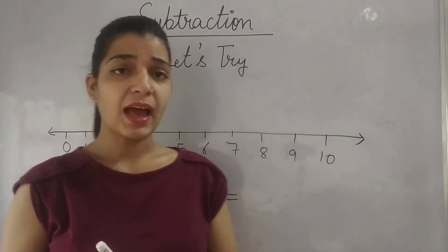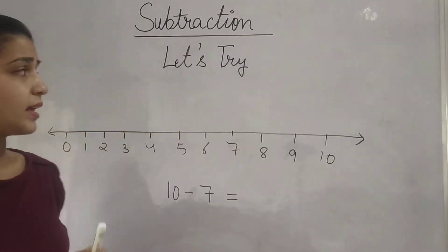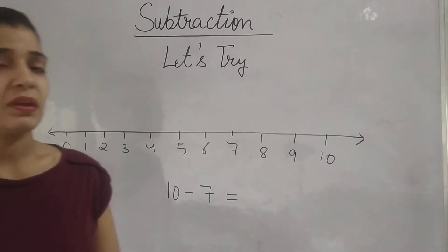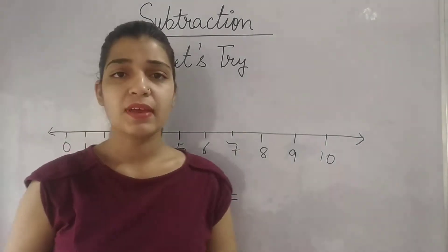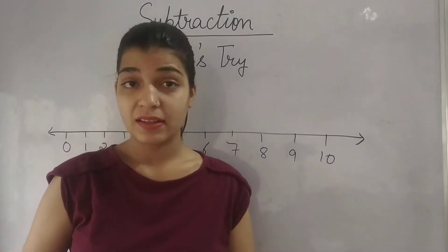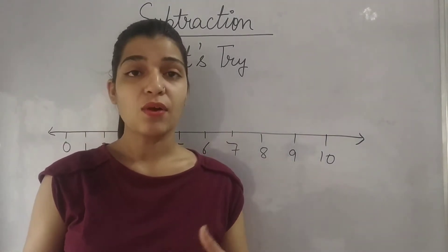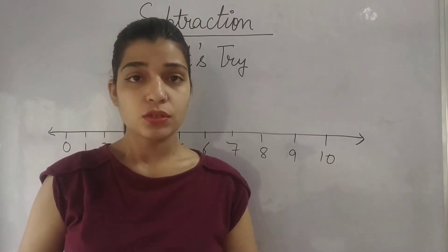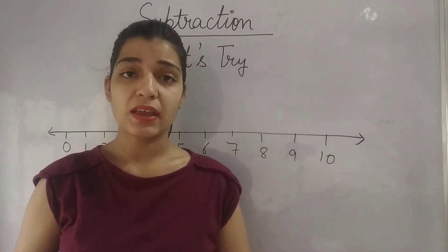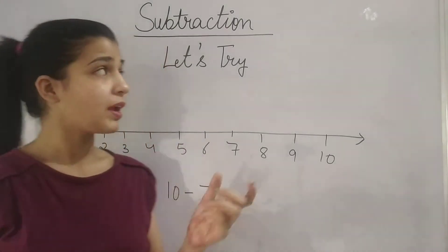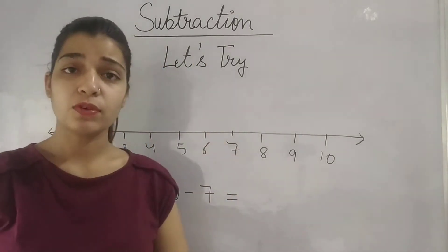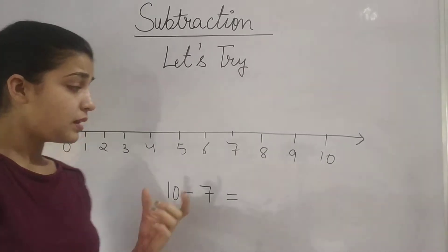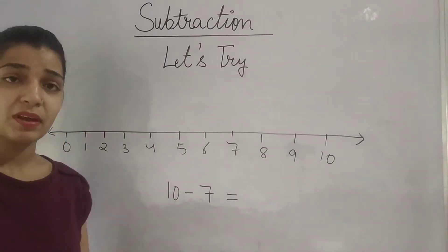So what we will do today — in the previous class what we have done, we have done some number lines. We learned how we can subtract numbers on a number line. So today we will do our 'Let's Try 1' that is based on subtraction. But before starting, we will do one example of the number line.